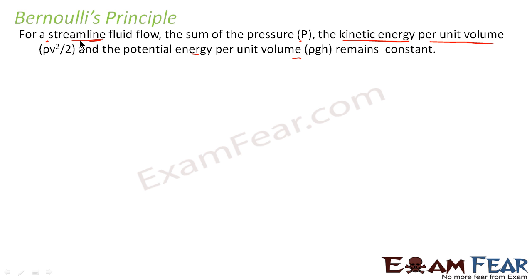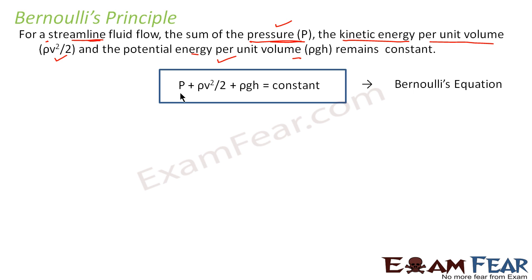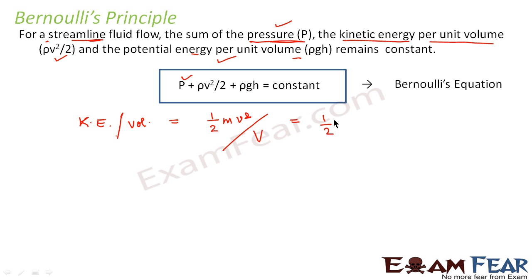For a fluid which is flowing steadily, the sum of these three quantities — pressure, kinetic energy per unit volume and potential energy per unit volume — remains constant. We can write it as P plus rho V square. Here P is pressure. The second term is kinetic energy per unit volume, which is half M V square per unit volume. Denoting volume by capital V, we get half V square into M by capital V, which is nothing but the density. So this comes out to be half rho V square.